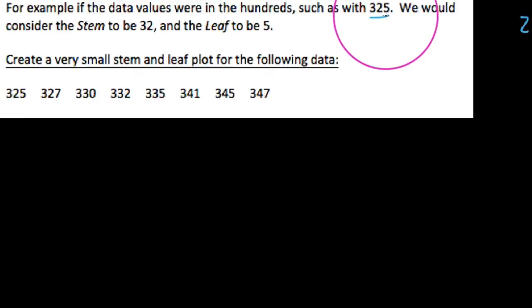How do you treat this situation? What we do is actually, instead of having a leading digit, we would treat the stem, or at least we would consider the stem to include the 3 and the 2. We would have leading digits, and in the leaf we would have the 5 here.